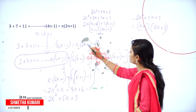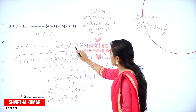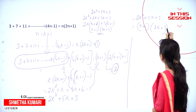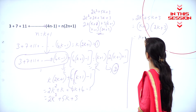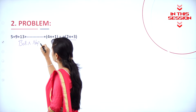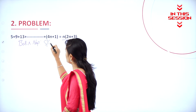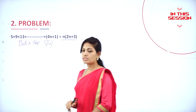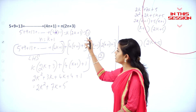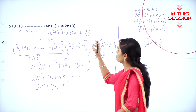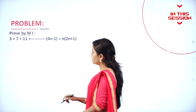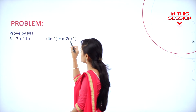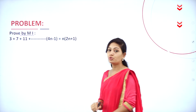So now this is in a form of RHS that is k into 2k plus 1, but here we have 2k plus 3. In the basis step we have to prove that LHS equals RHS and n is equal to 1. You can cross verify the RHS in equation number 1: k into 2k plus 3. So 3 plus 7 plus 11 plus (4n minus 1) is equal to n into 2n plus 1.